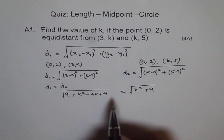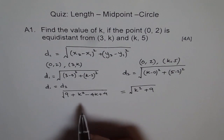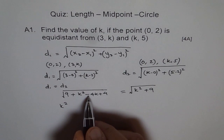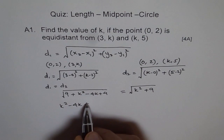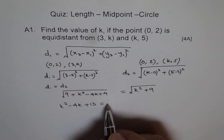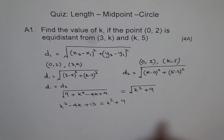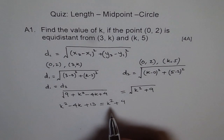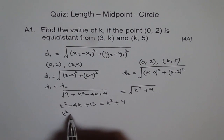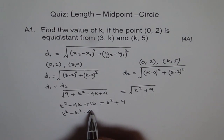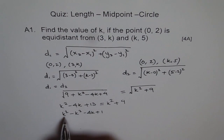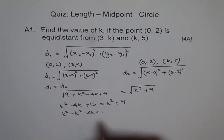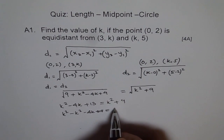We can square both sides and get rid of the square roots. Then we get: k square minus 4k, and 9 plus 4 is 13, equals k square plus 9. We can bring terms to the same side to find the value of k. It becomes k square minus k square minus 4k plus 13 equals 9. Let me take 13 to the other side, because the k squares are getting cancelled out. So equals 9 minus 13.